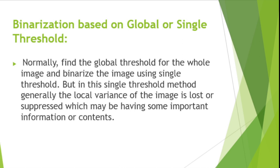Binarization based on a global or single threshold means we find a global threshold for the whole image, or Binarize the image using a single threshold. In this process we use both a global threshold or a single threshold, but in the single threshold method, generally the local variance of the image is lost or suppressed, which may contain some important information or content.